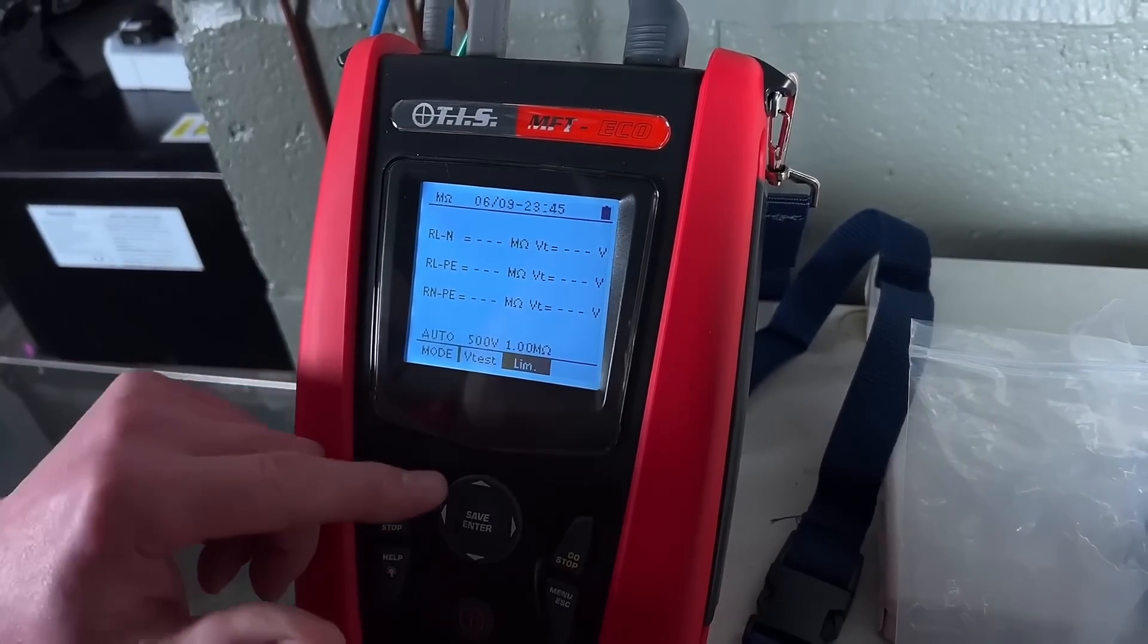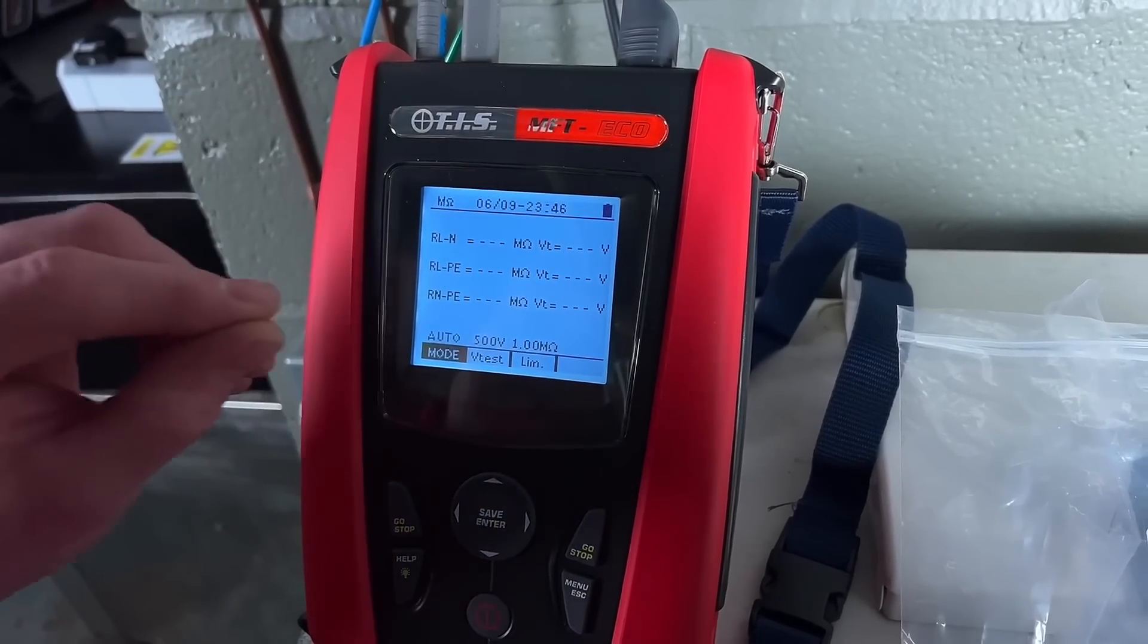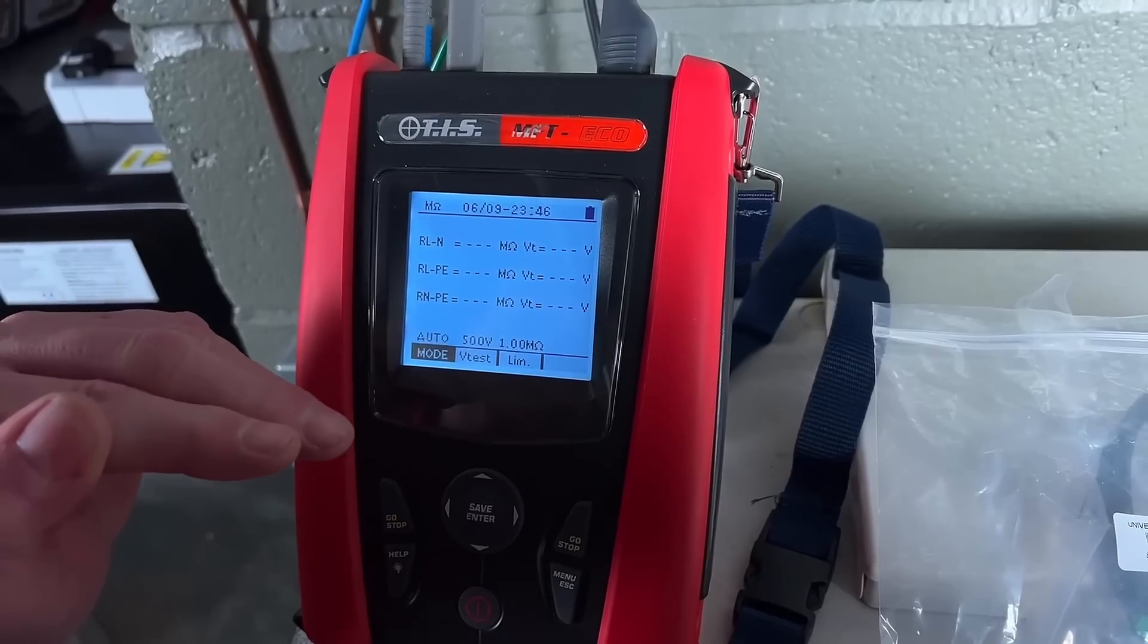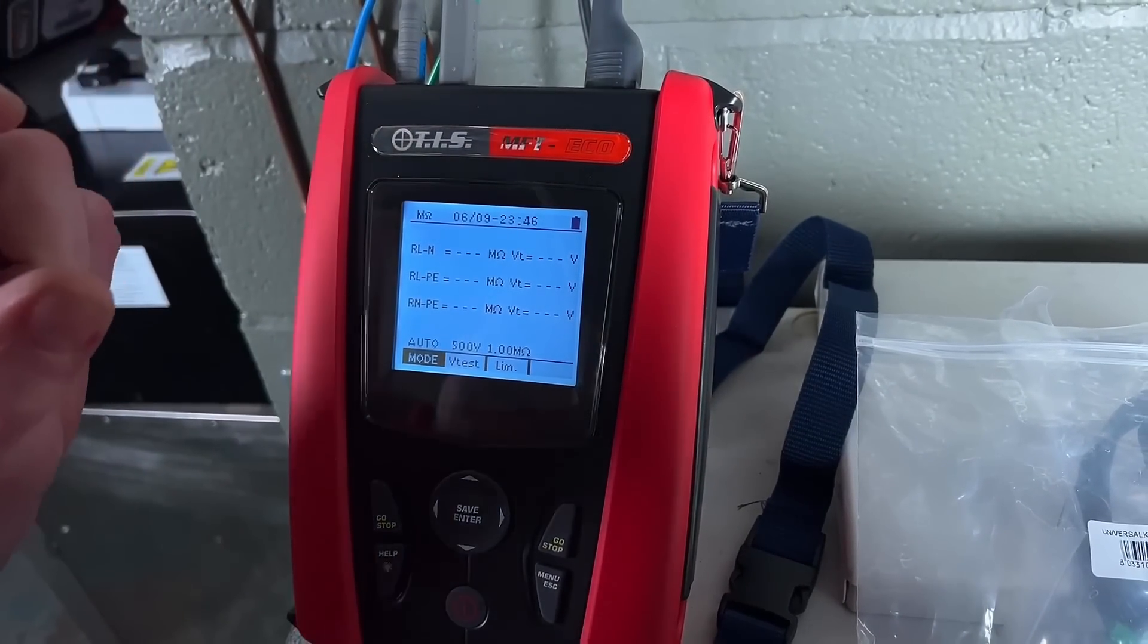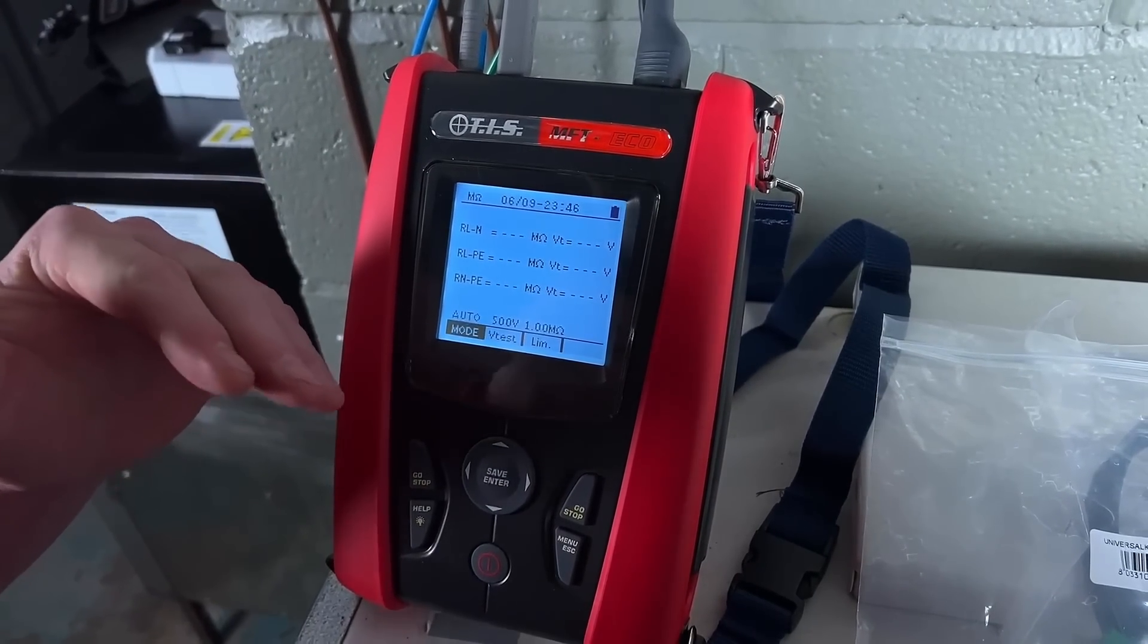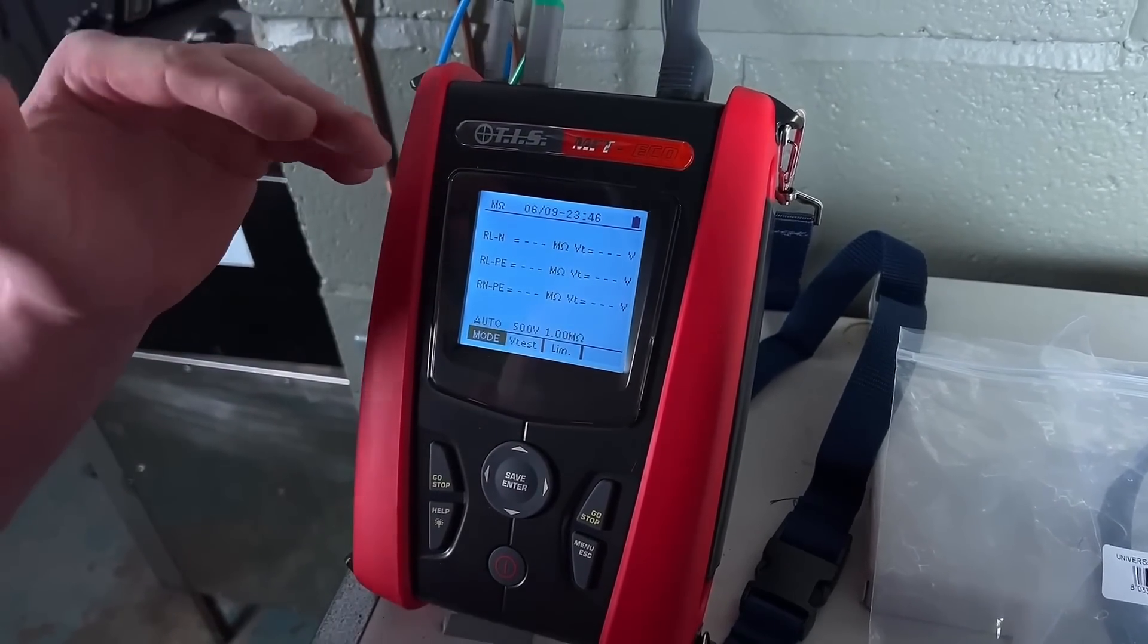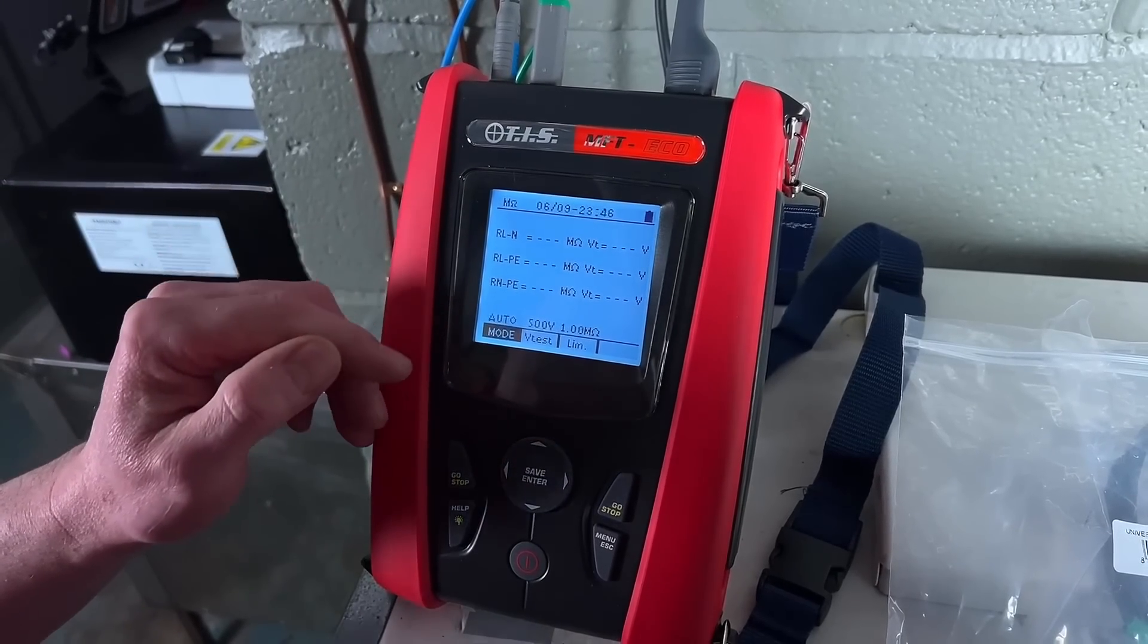But what's really good on this auto test: when I've connected all three leads, it will actually first of all apply a voltage that starts to climb between my line and neutral conductors. If it detects something's there, it will throttle back that voltage so it doesn't pass too high a voltage and damage it. In other words, it's a little Rick check. So if Rick hasn't removed all the loads, it will spot that for me before carrying out the test between our line and protective earth and neutral and protective earth.